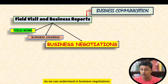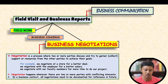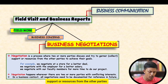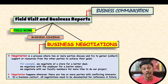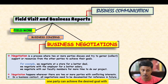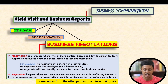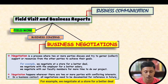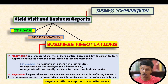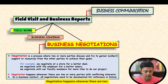In business negotiations, we need to understand in detail what negotiation is. Negotiation is a process where two or more parties discuss and try to garner — that is, collect — support or resources from the other parties to achieve their goals. For example, we negotiate at a store for a better deal, negotiate with an employer for a better salary, or negotiate with faculty members for more time to complete a project.